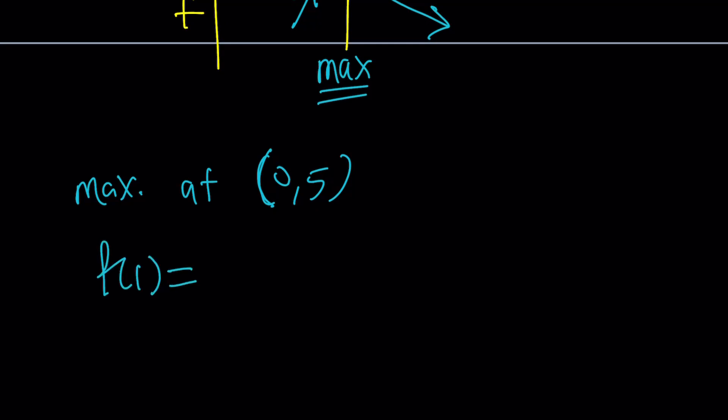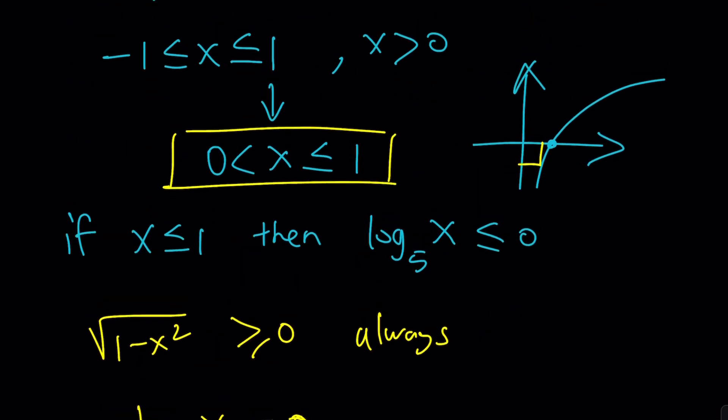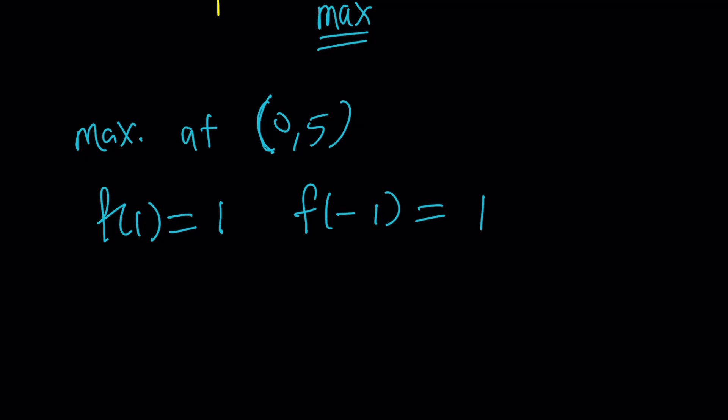And now, if you check f of 1 equals 1, why did we check f at 1, though, right? That's a good question. Here's the thing. Those are going to be the endpoints. You know why? Because remember, our x values were supposed to be on this interval, and we said that, okay, it's going to be from negative 1 to 1. Be careful about that. So we're only checking those points, and if you check those points, you're going to realize that we get 1.